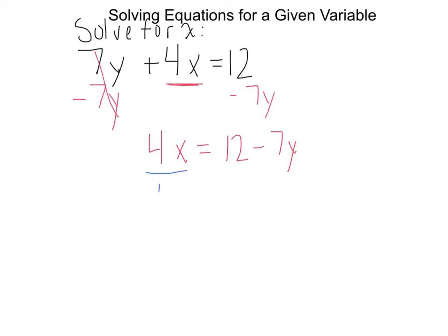And to get x alone, we need to divide both sides of the equation by 4. And I'll see that x is equal to... Now here's where, again, people might write their answers a little differently. Here I see I have 12 divided by 4 minus 7y divided by 4. I like to divide out what I can. So I see that 12 is divisible by 4. So I'm going to do 12 divided by 4 is 3 minus... Now I have to do 7y divided by 4. Now that's not so nice.